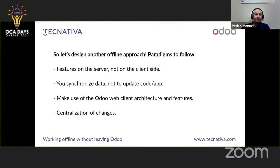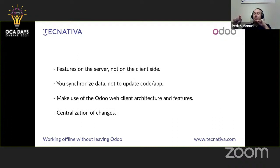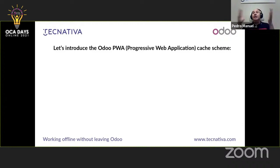The other paradigms are: synchronize data, not code or application — updates happen because you're updating the core framework, not to replicate features; make use of the Odoo web client architecture and its rich feature set of widgets; and centralize changes — when you migrate Odoo, you do it once, not in multiple places.